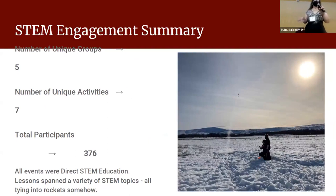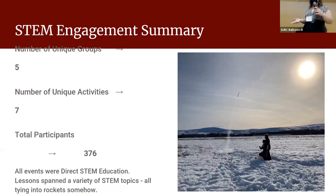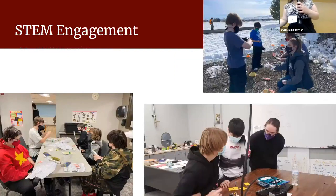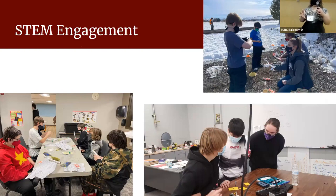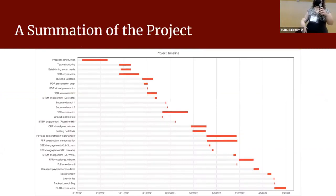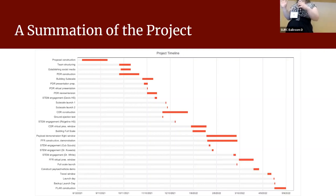A big part of our competition was STEM engagement. We interacted with five unique groups and did seven unique activities — two groups had two activities each. We were required to reach 250 people and reached a total of 376. We built rockets and taught rocket parts to the local Cub Scouts, and we taught them how to pack parachutes and launched with them that day. We submitted six different reports to NASA and did presentations on three of them to the NASA board, culminating in our final launch in Huntsville, Alabama.